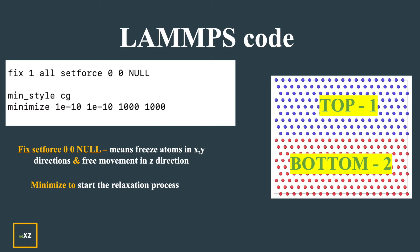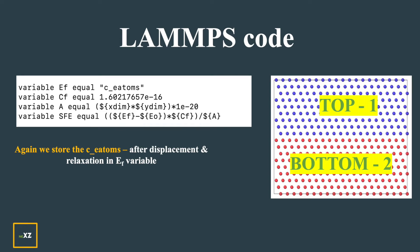Before minimization I set the force of all atoms to 0, 0, and null — freezing atoms in X and Y directions and allowing free movement in Z. After displacement and relaxation I store the energy in variable EF, which gives the stacking fault energy. The area is the XY plane area. I multiply by 10^-20 to convert to Angstrom squared, and apply the conversion factor to get the stacking fault energy in the final formula.